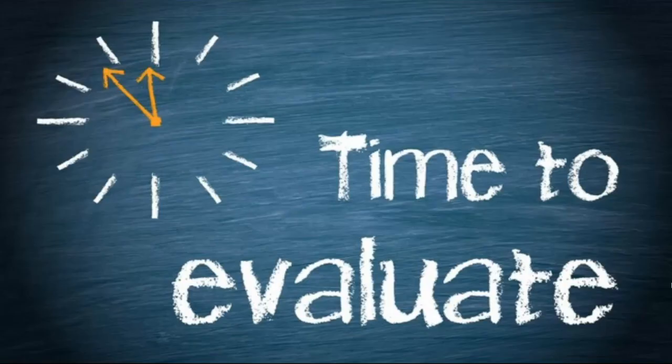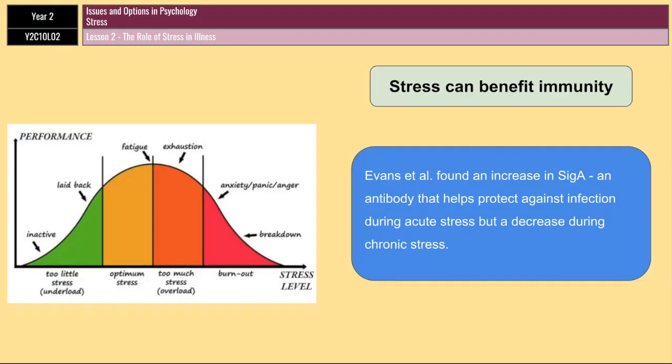We'll now look at a couple of evaluation points. The first is research showing that in some situations stress may actually enhance the activity of the immune system — going against the idea that stress is always a bad thing. Evans et al. looked at the activity of an antibody called SIgA, which helps protect against infections.